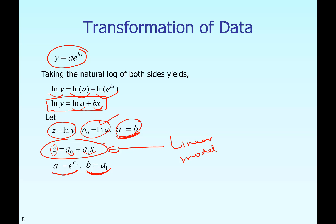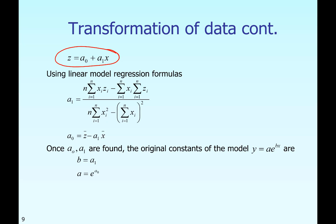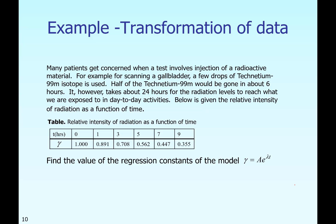We now have a linear regression model z versus x, and we already know the simple summation formulas from linear regression to find a₀ and a₁. Once we find a₁, that is the value b; once we find a₀, then a = e^(a₀). To illustrate this, consider an example: when patients go to a hospital to have internal organs scanned, they are given a radioactive dye — made of the Technetium-99m isotope — whose half-life is about six hours, and it takes about 24 hours for radiation levels to return to normal.